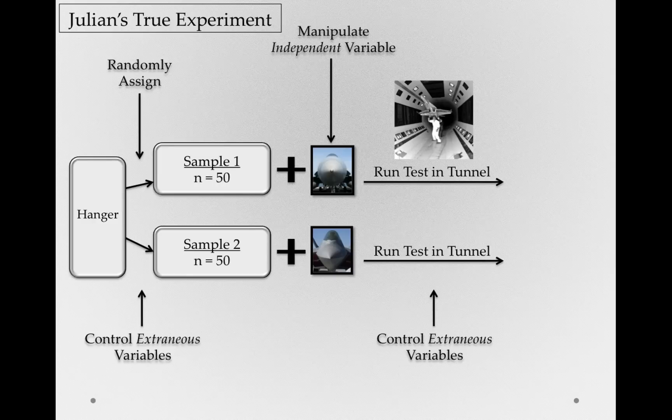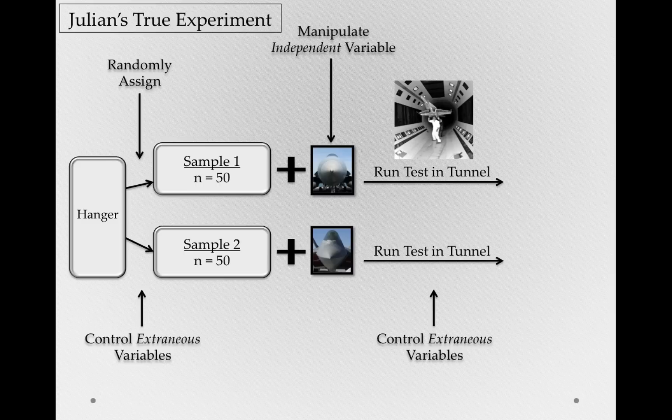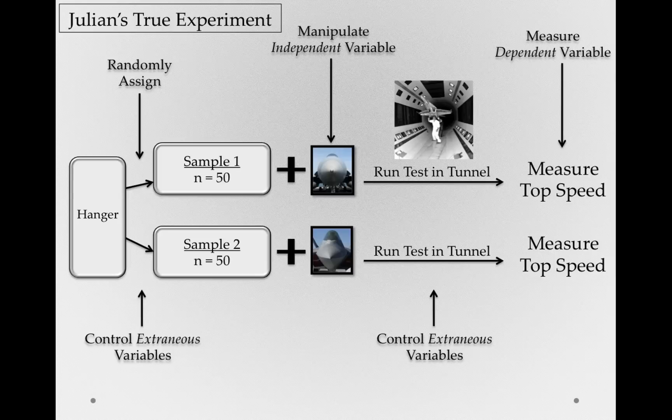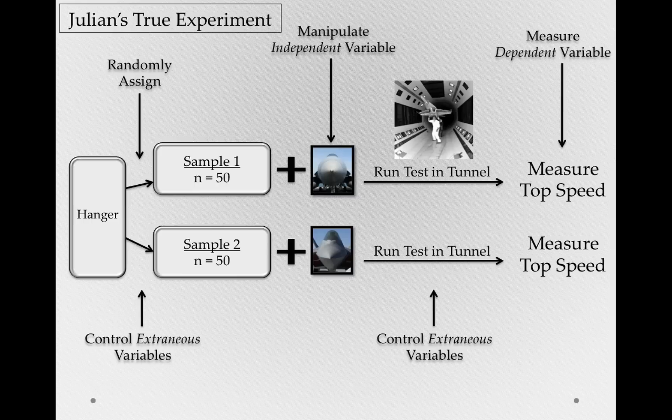And so a wind tunnel is a great metaphor for an experiment. We are controlling as many things as we can, such that the individuals who are running through the experiment experience the experiment in as close of a way as possible. Now finally, once we've run the test in the tunnel, we're going to measure the dependent variable this time. So we're going to measure the top speed it can achieve. Now, this is hard to think about in a wind tunnel circumstance, but when measuring top speed stability, we can think of the top speed at which the planes first vibrate. So a measure of top speed.